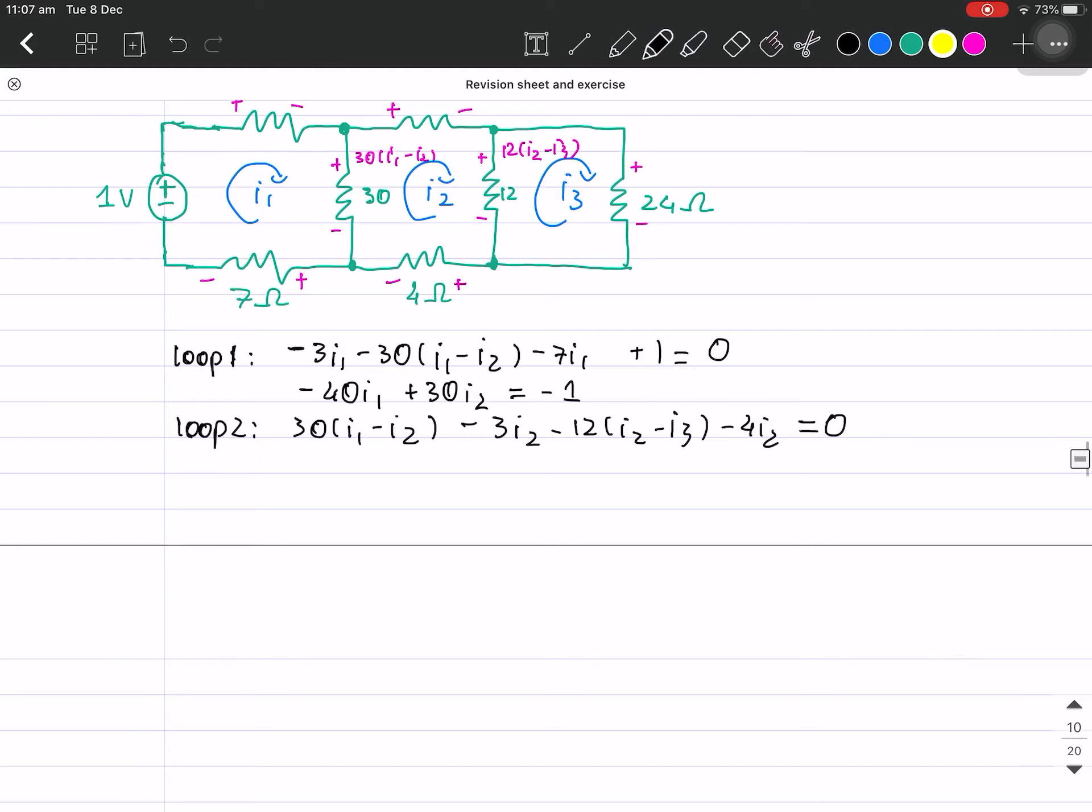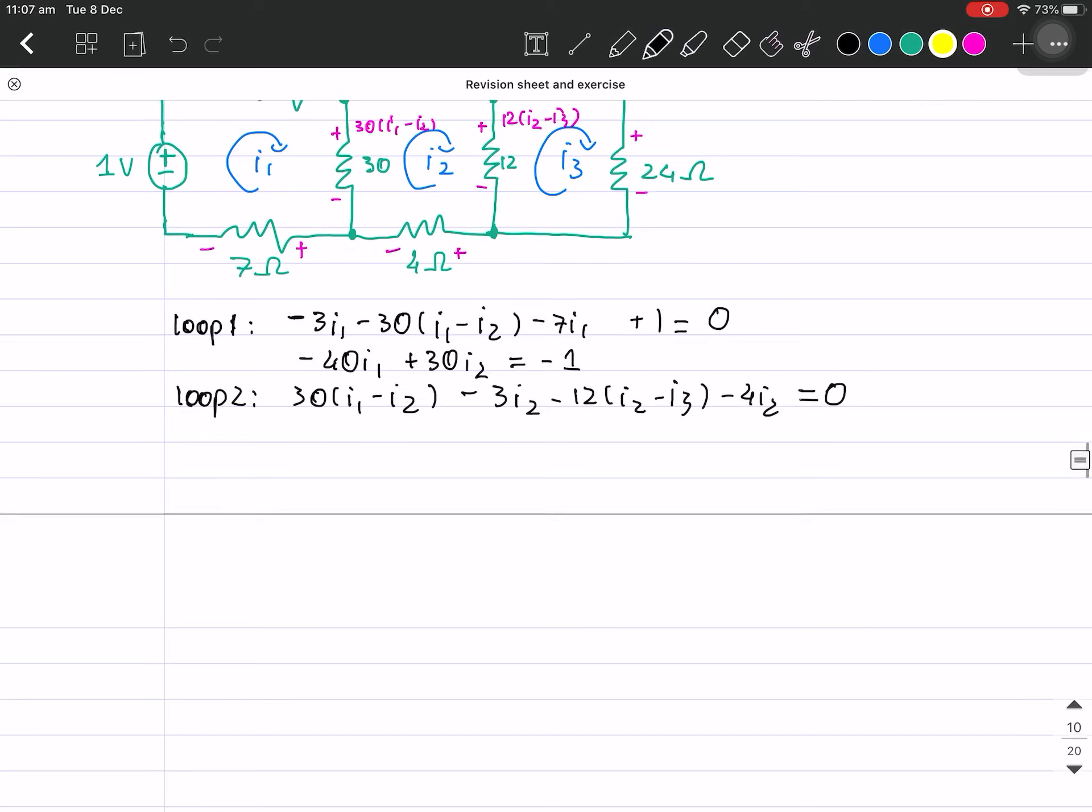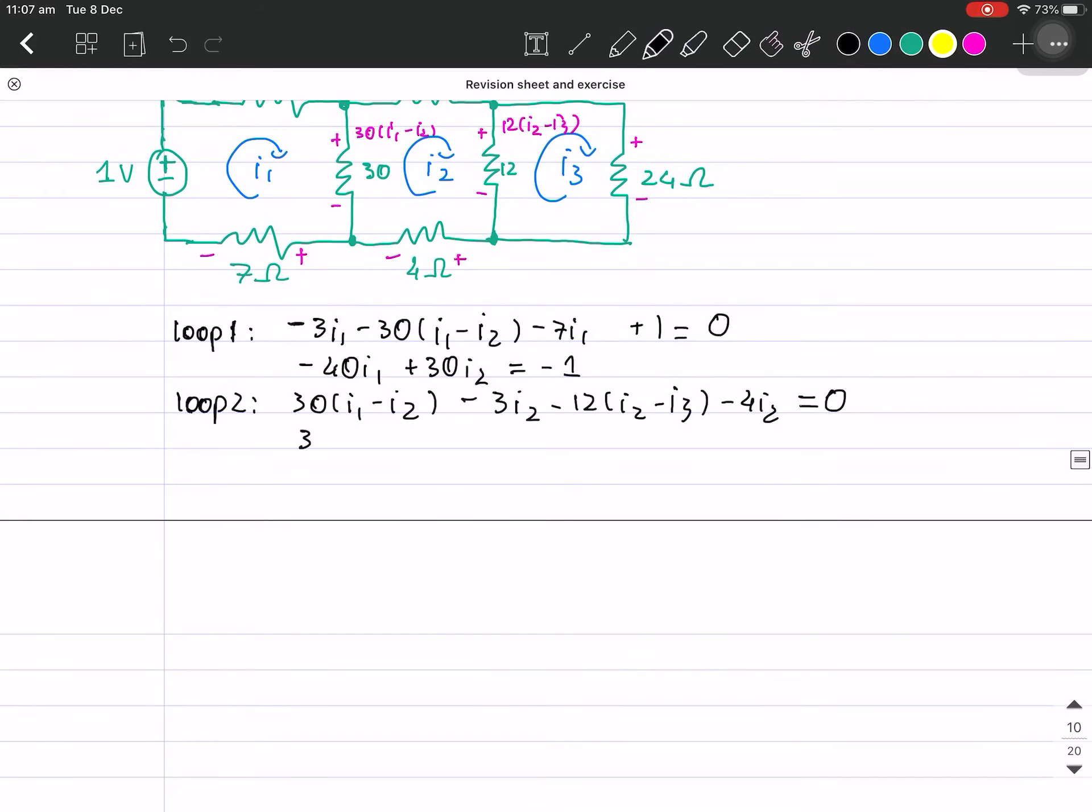And we solve this out. So what we have is 30i1 minus 49i2 plus 12i3 is equal to 0.